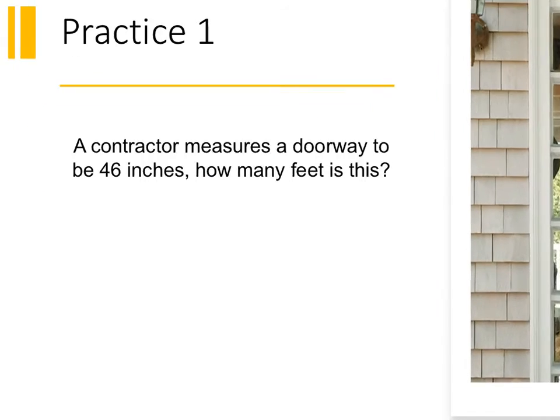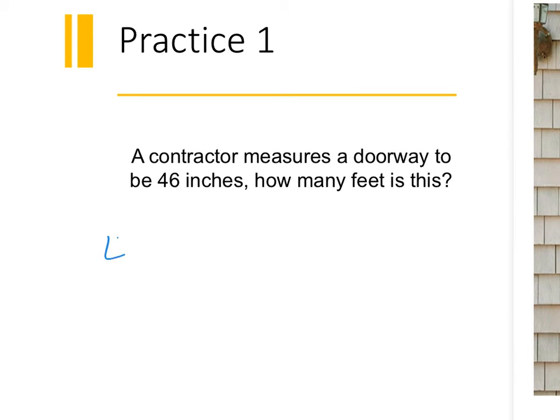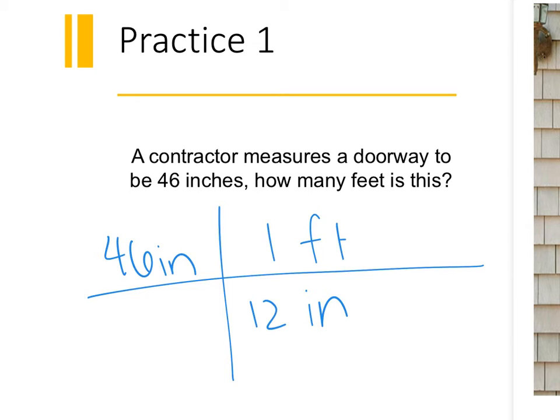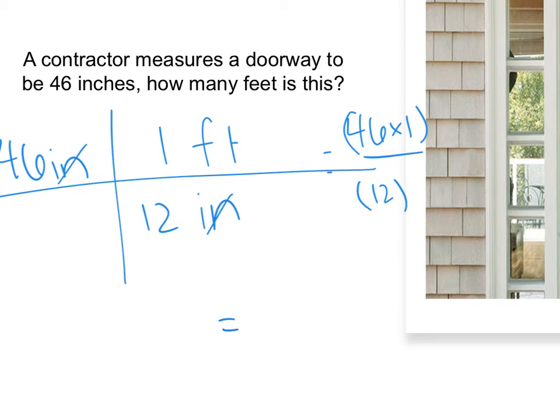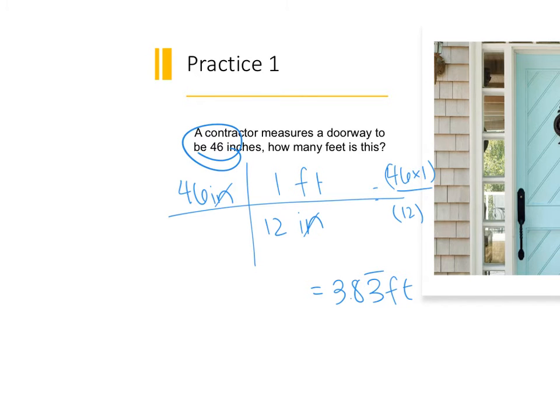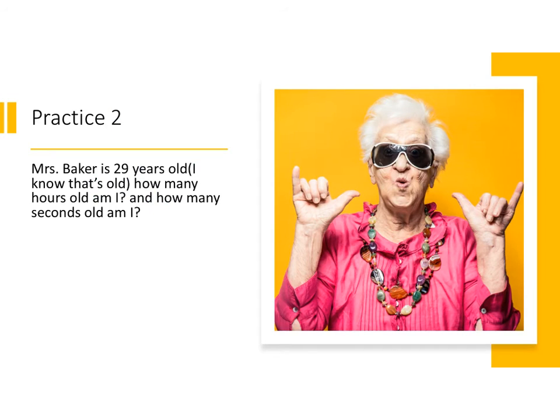So first practice, if I take a look, a contractor is measuring a doorway to be 46 inches. How many feet is that? I want to get rid of inches. So do I put it on the top or on the bottom? Bottom. I have how many inches in a foot? 12. Inches cancel. So 46 times 1. So multiply the top. Parentheses divided by the bottom. Multiply. Well, what is 46 divided by 12? Who's got a calculator? 3.83 repeating. Feet, though, right? All right. Well, my initial unit is two sig figs. So let's go ahead and let's say this is just 3.8 feet. Boom. So do you see how I'm going to cancel out?